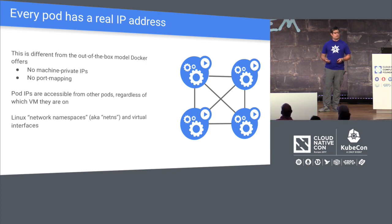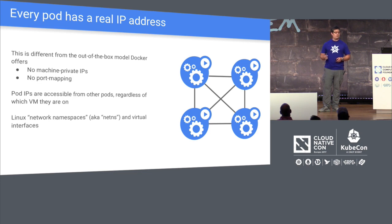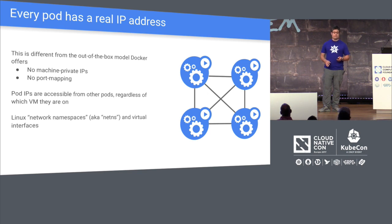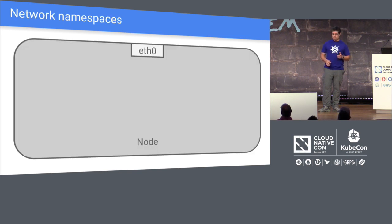Every pod should be accessible to every other pod, regardless of the VM they're on. You shouldn't worry about what VM they're on. That unit of work should be schedulable across the cluster and reachable to all other elements inside the cluster. We're also going to be using traditional, old-school Linux technology to implement this — basic IP routing and systems that have been around for decades.